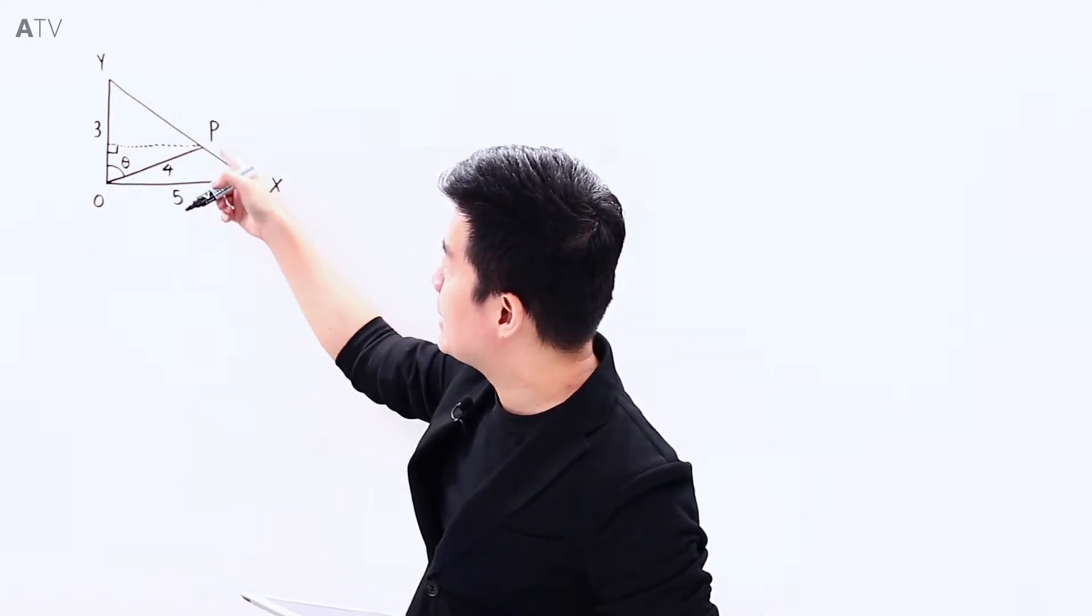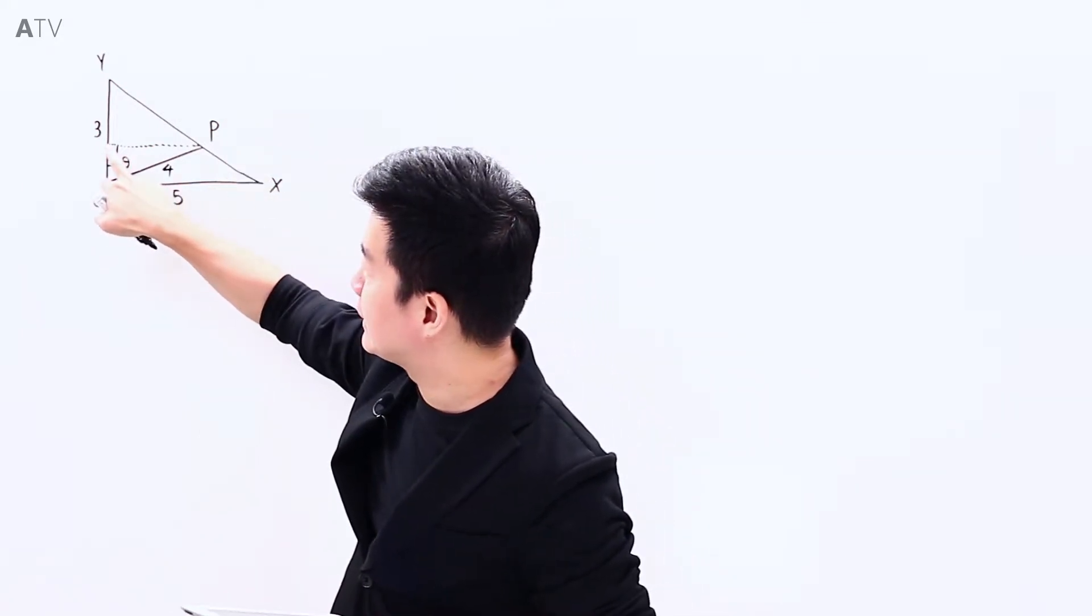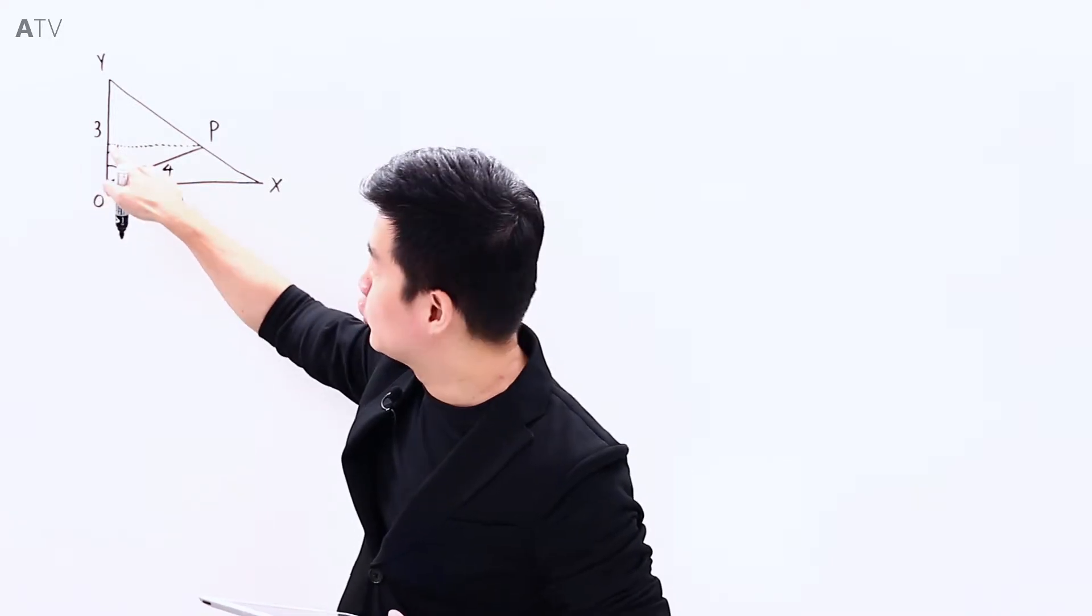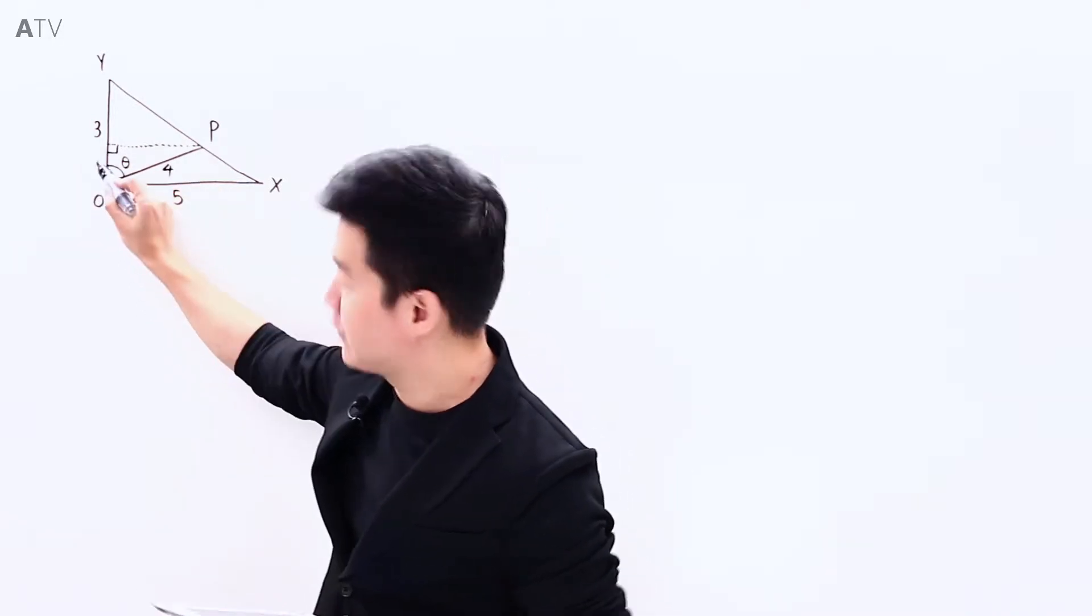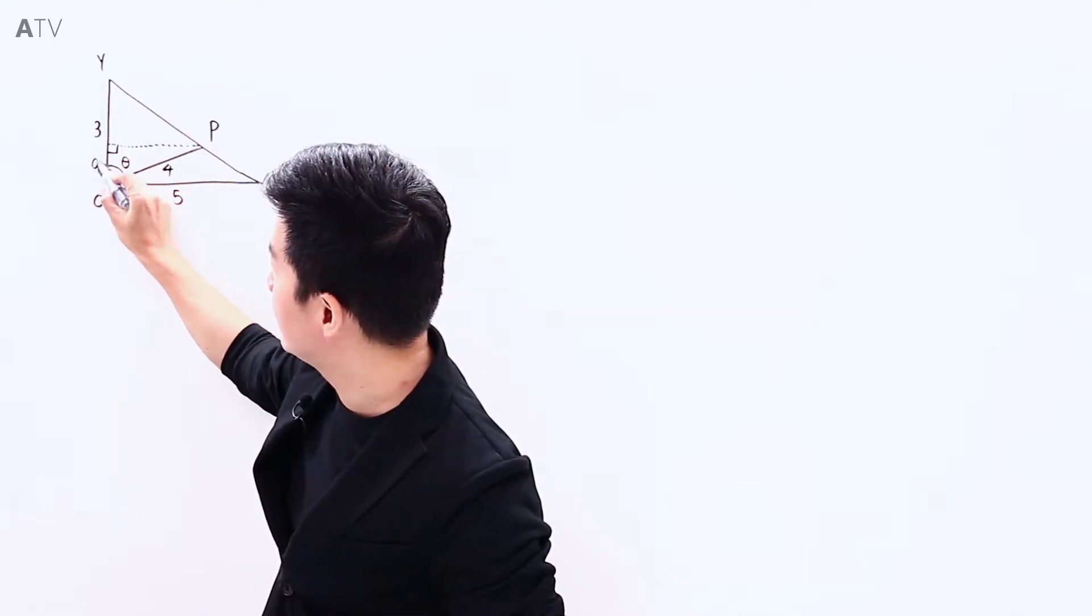So if we are looking at P to OX, we are looking at this distance here. And if I were to look at this as a right-angled triangle for this distance here, if I were to call this distance, let's say, A,